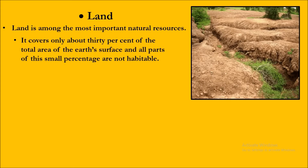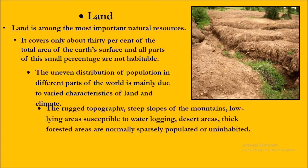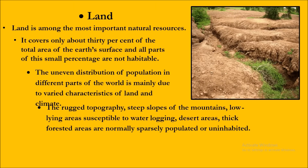The remaining small parts of land that exist are not all habitable — they cannot be used for habitat. The uneven distribution of population in different parts of the world is mainly due to the varied characteristics of land and climate. We find large populations in some areas in Asia, while in North America, South America, or Europe, you don't find such thickly populated places.